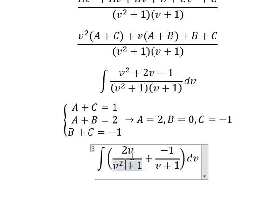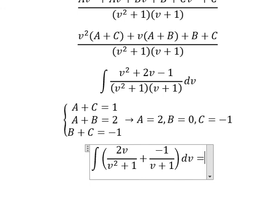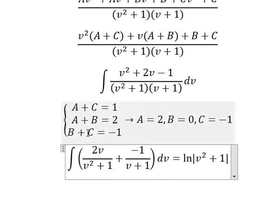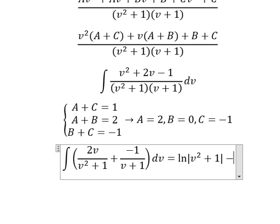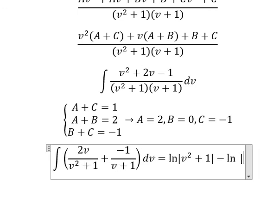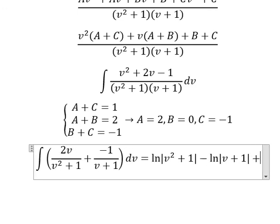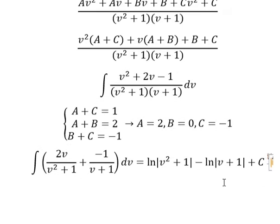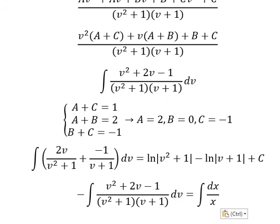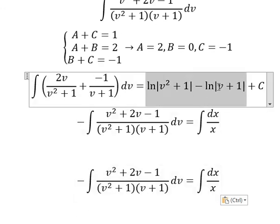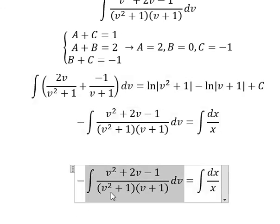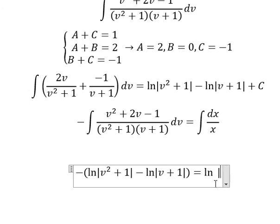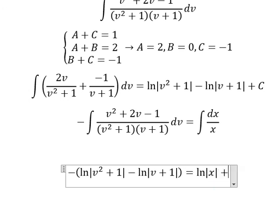The integration of this gives ln of the absolute value of v squared plus 1. This term gives negative ln of the absolute value of v plus 1, and we put the constant C. Now we return back and substitute: the x term gives ln of the absolute value of x, and we add constant C.